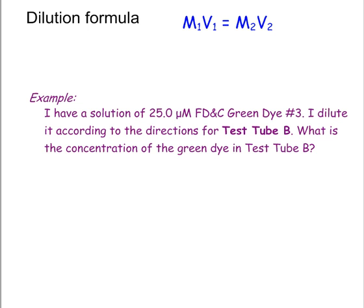So the first thing I'm going to do is write down the equation, and then I'm going to put in the variables that I know. I know that I'm starting with 25 micromolar green dye and I'm starting with two milliliters of it.